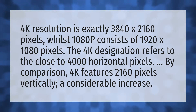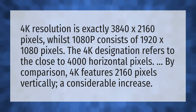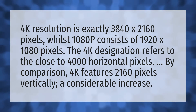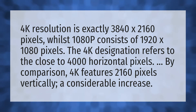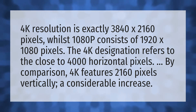4K resolution is exactly 3840 by 2160 pixels, whilst 1080p consists of 1920 by 1080 pixels. The 4K designation refers to the close to 4000 horizontal pixels. By comparison, 4K features 2160 pixels vertically, a considerable increase.